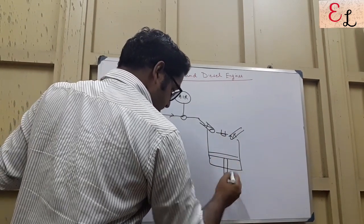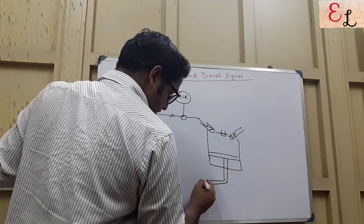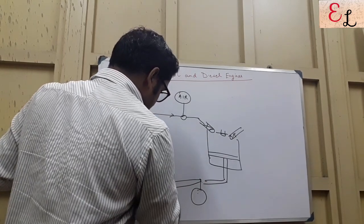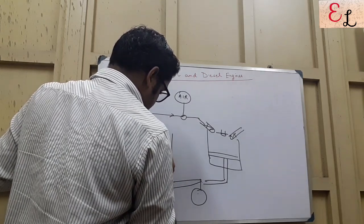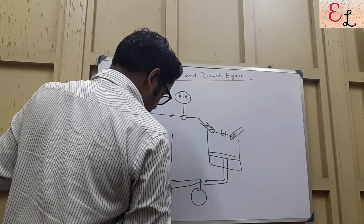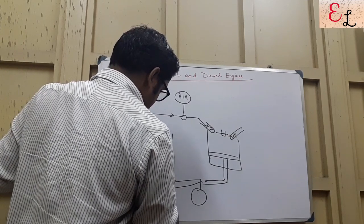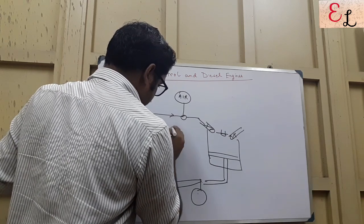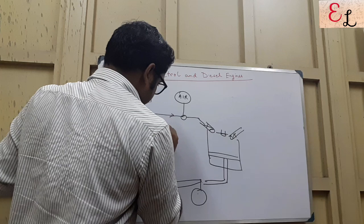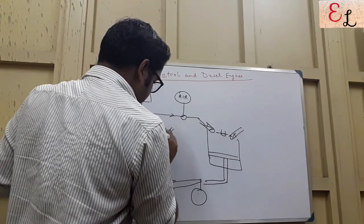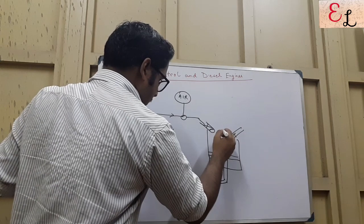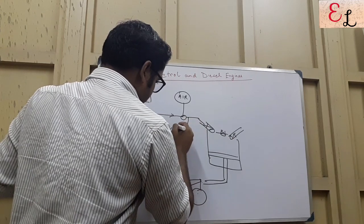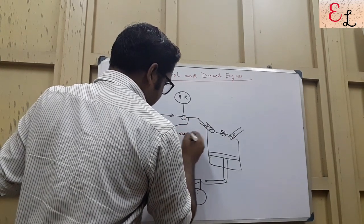This piston-cylinder arrangement is connected to the wheel, which is connected to a crankshaft, and to another engine which also has a similar arrangement with a valve fitted into it and a spark ignition point. This acts as its inlet and this acts as the mating element of this, so the two cylinders are in connection with each other.